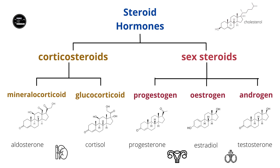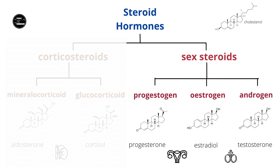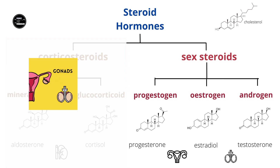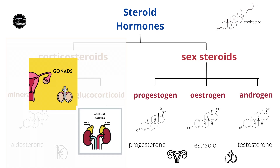These are the sex hormones. There are three types of sex hormones: the progestogens, the estrogens, and the androgens. Of the progestogens, the main endogenous progestogen is progesterone. There are a few different estrogens, and the main ones are estradiol, estrone, and estriol. The main androgen is testosterone. The sex hormones are mainly produced by the gonads — that is the ovaries and the testes — but small amounts are also produced by the adrenal cortex.